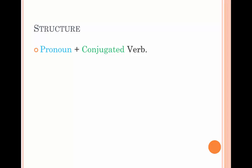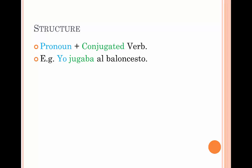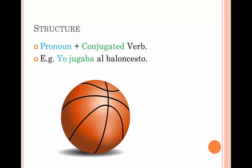Structure. To structure this, we simply take a pronoun and a conjugated verb. For example, yo jugaba al baloncesto, meaning I played basketball. You're describing what you used to do. You used to play, so you're describing how you used to play basketball.